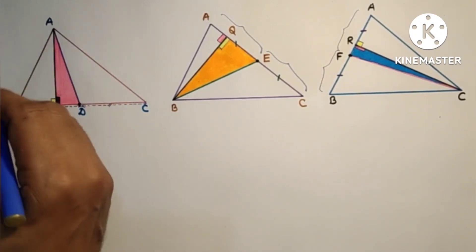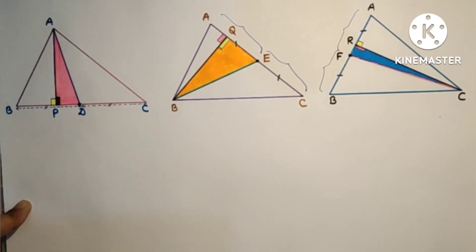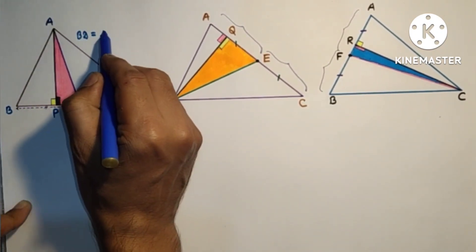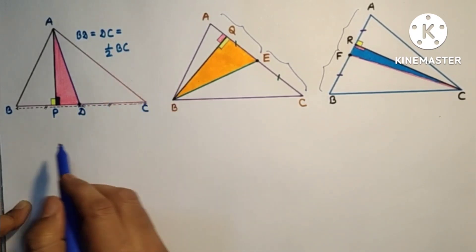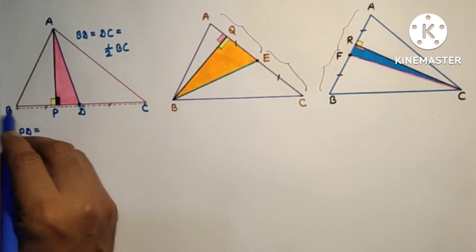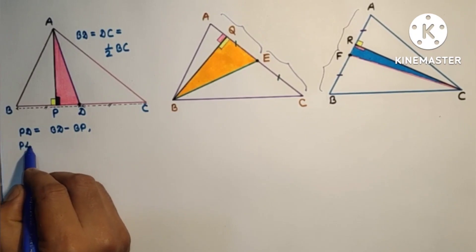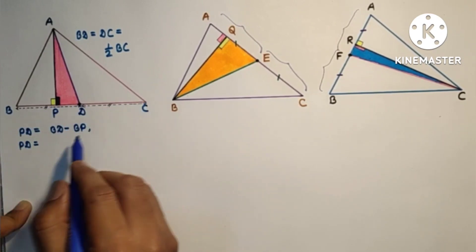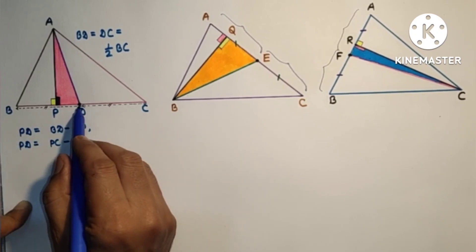Considering triangle APB: AB² = BP² + AP². Also, BD = DC = ½BC. PD can be written as BD minus BP, and PD can also be rewritten in terms of PC as PC minus DC.